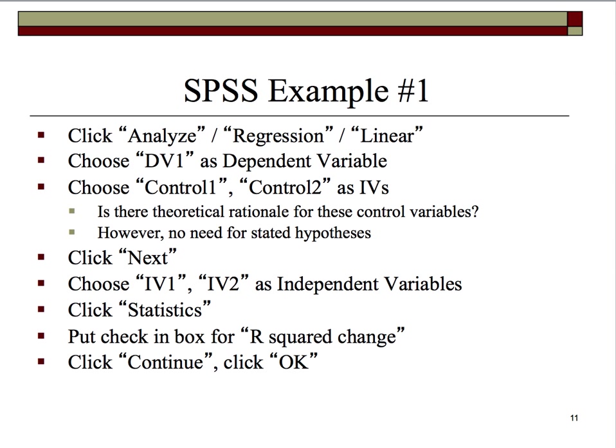First, click on Analyze, then select Regression, then click Linear Regression. We would choose DV1 from a list of dependent variables, and select Control1 and Control2 as independent variables. With control variables, there really needs to be some theoretical rationale — not just to willy-nilly screen out things you think might be important.